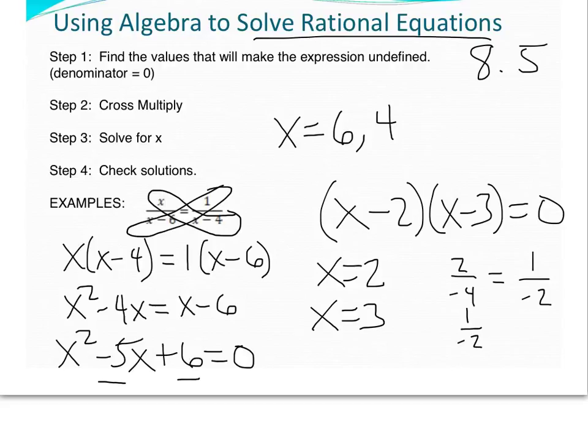Let's check the 3, see if that works. If I plug in 3, I have 3 over 3 minus 6, which is negative 3, equals 1 over 3 minus 4, which is negative 1. 3 over negative 3 simplifies to negative 1, so I know that both of these solutions work. A plus.